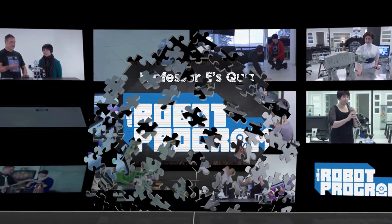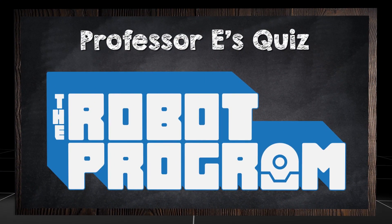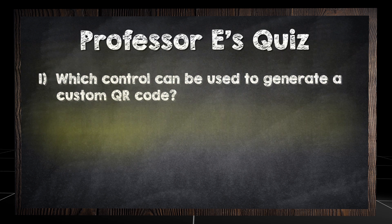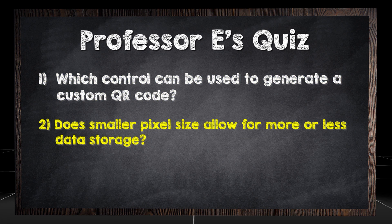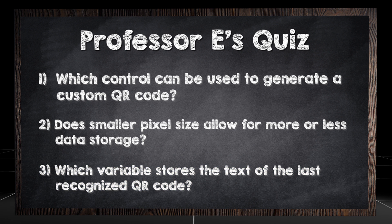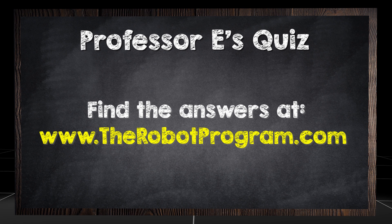Try coding messages to your friends and see what your robot detects. Thanks for watching this episode and we'll see you next time. Which control can be used to generate a custom QR code? Does smaller pixel size allow for more or less data storage? Which variable stores the text of the last recognized QR code? Find the answers at therobotprogram.com.